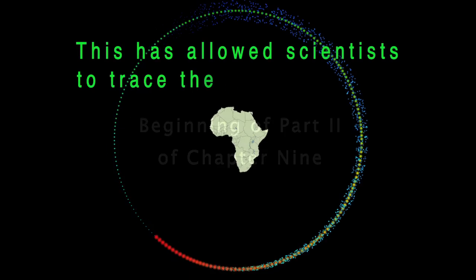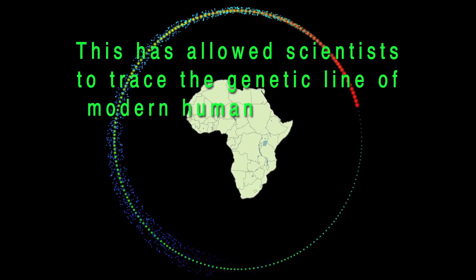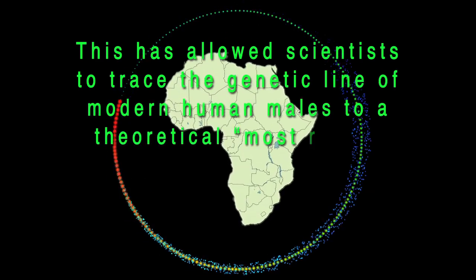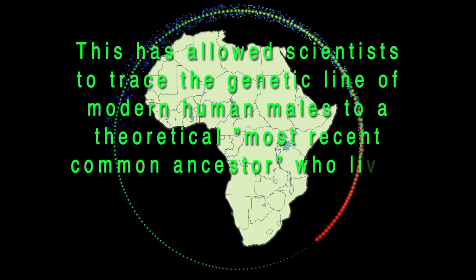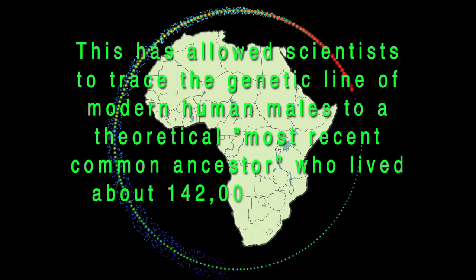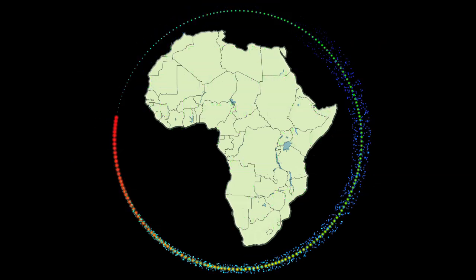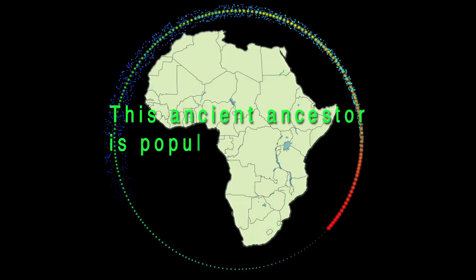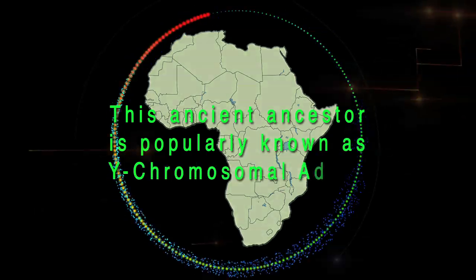The genetic line of modern human males traces back to a theoretical most recent common ancestor who lived about 142,000 years ago in Africa. This ancient ancestor is popularly known as Y-chromosomal Adam.